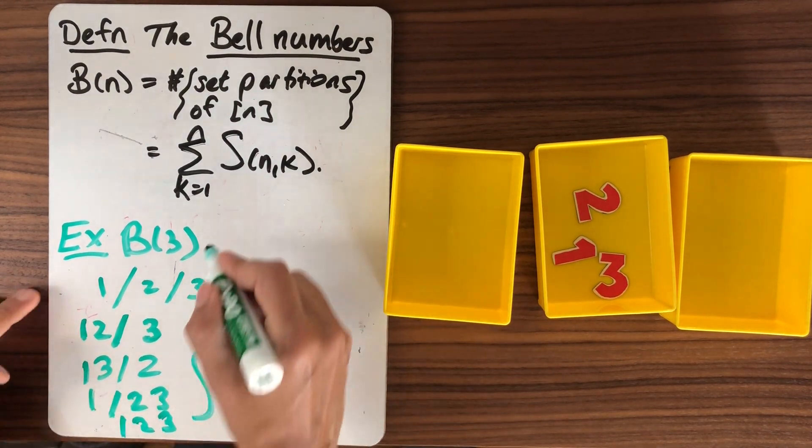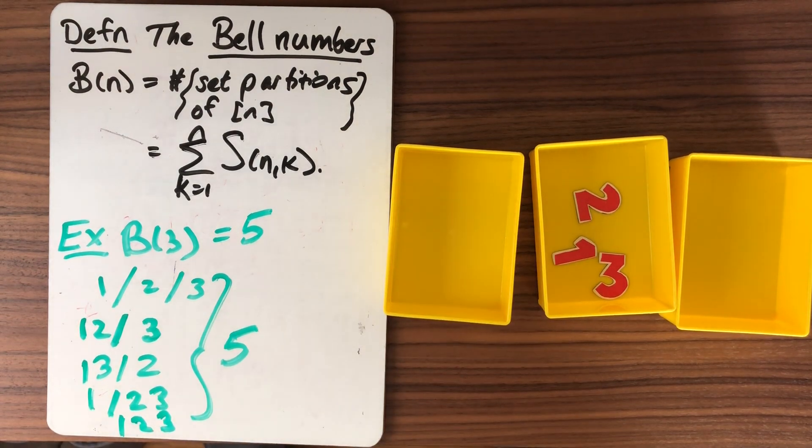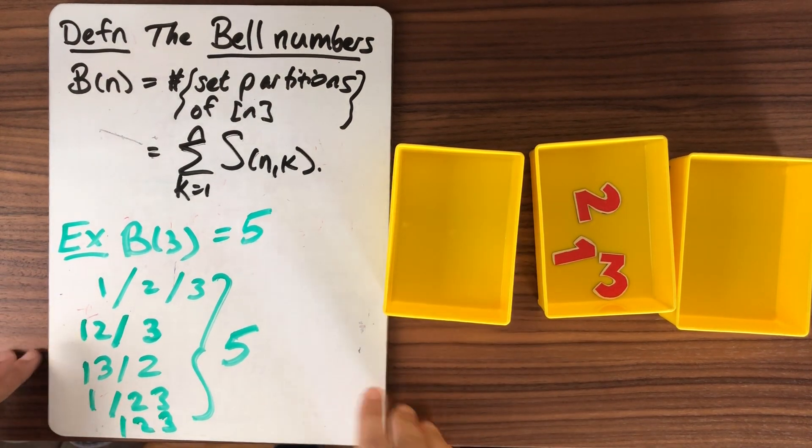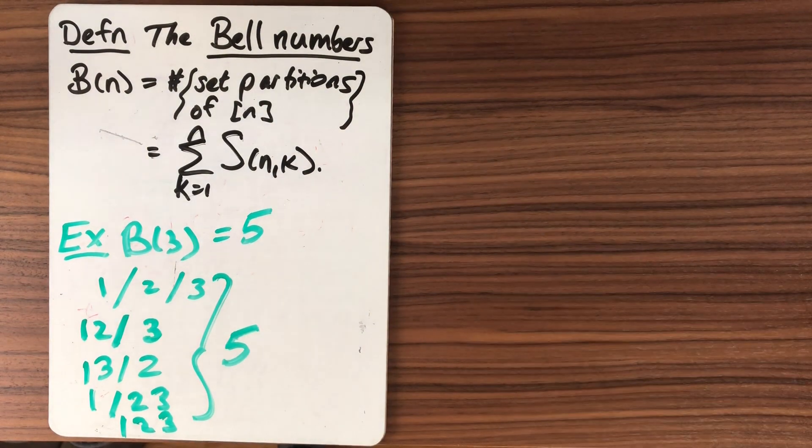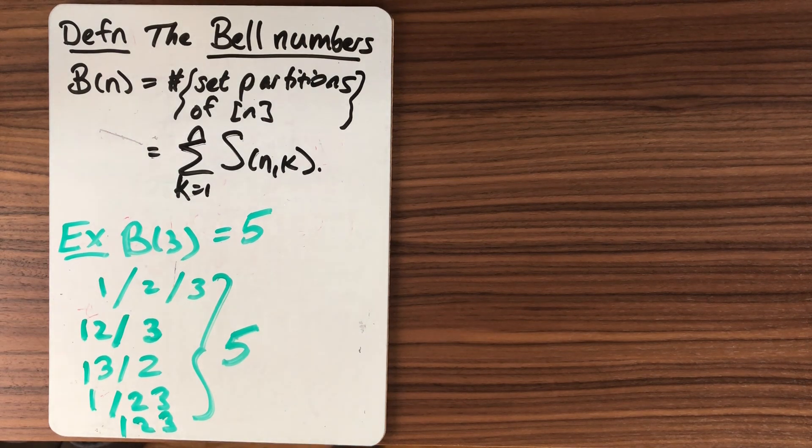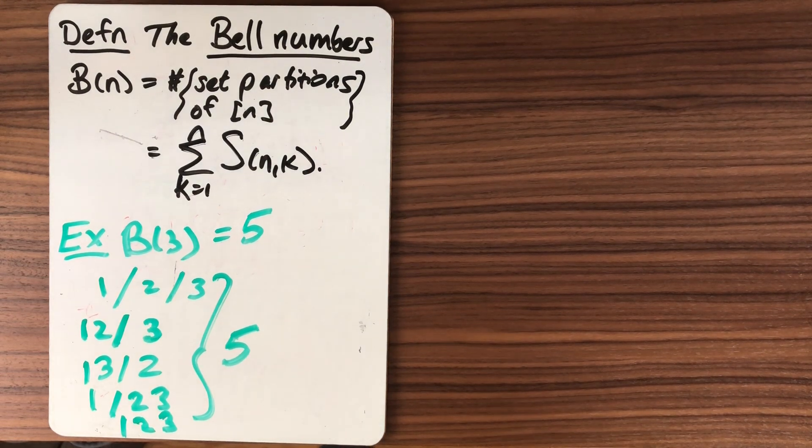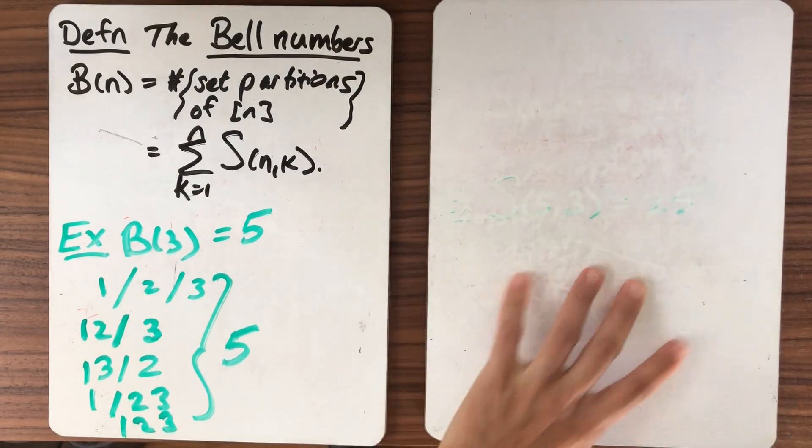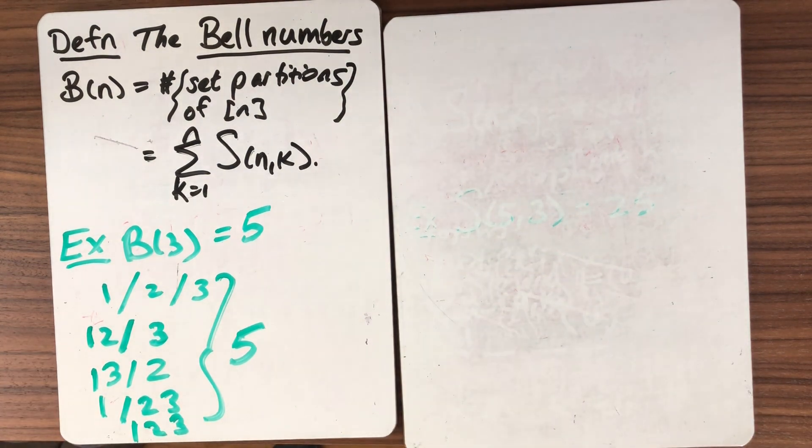So you can see in total here, I have 5. So B(3) is equal to 5. So 5 is not quite as nice a number as something like 6, which factors nicely. But there's still a chance that we're going to have a good recurrence relationship. And that's what we want to look for next. So how can we come up with a recurrence relationship for these Stirling numbers?